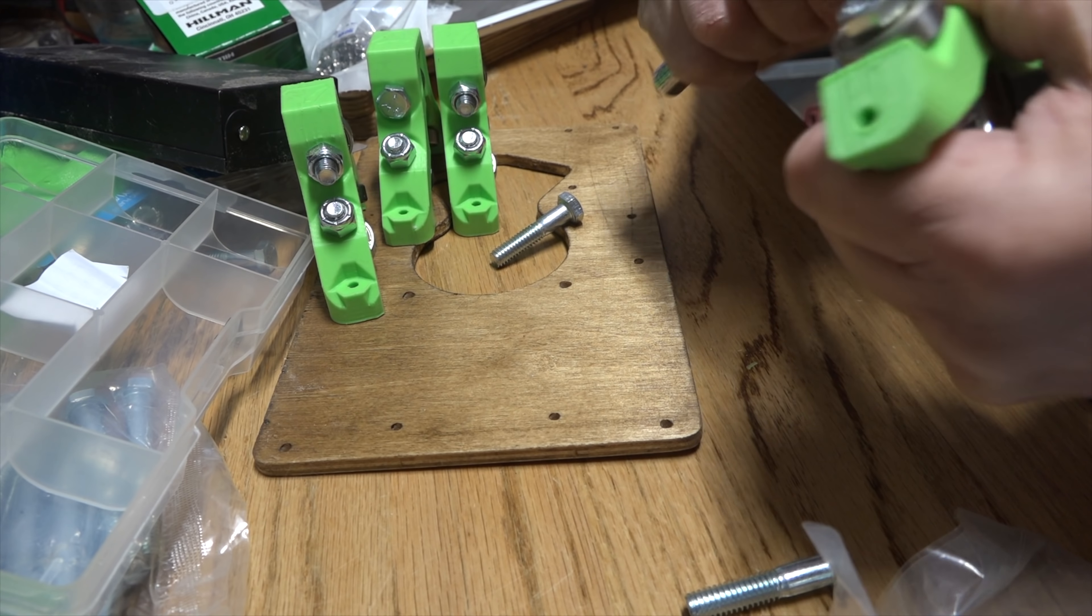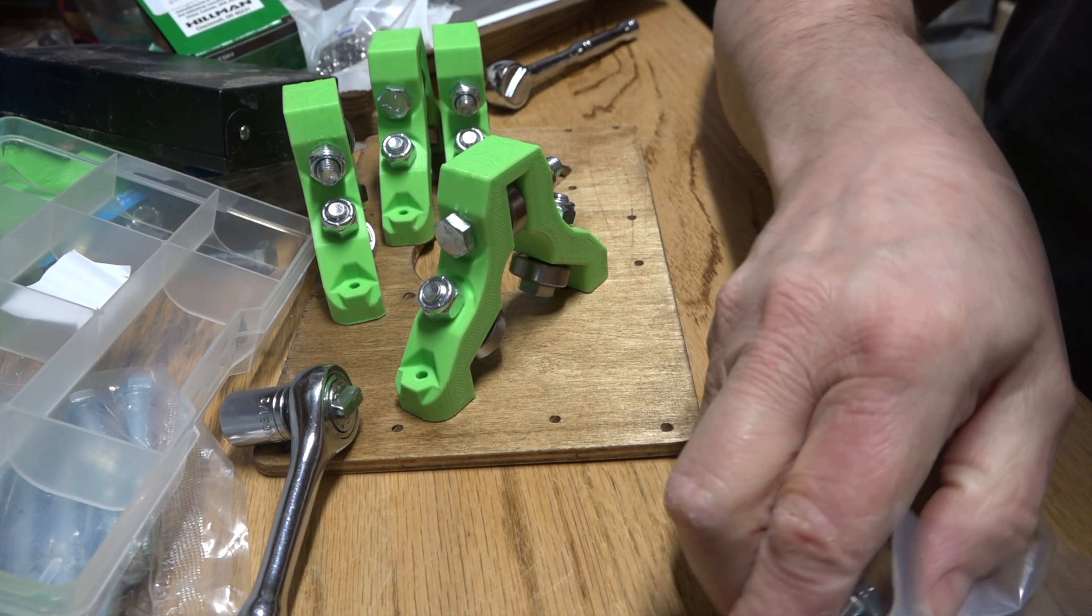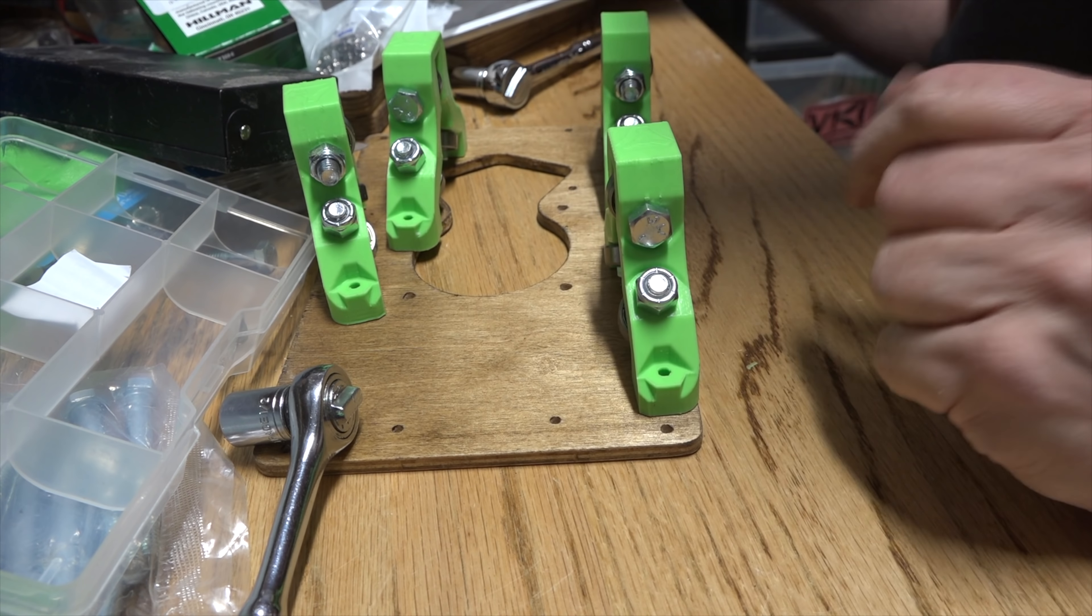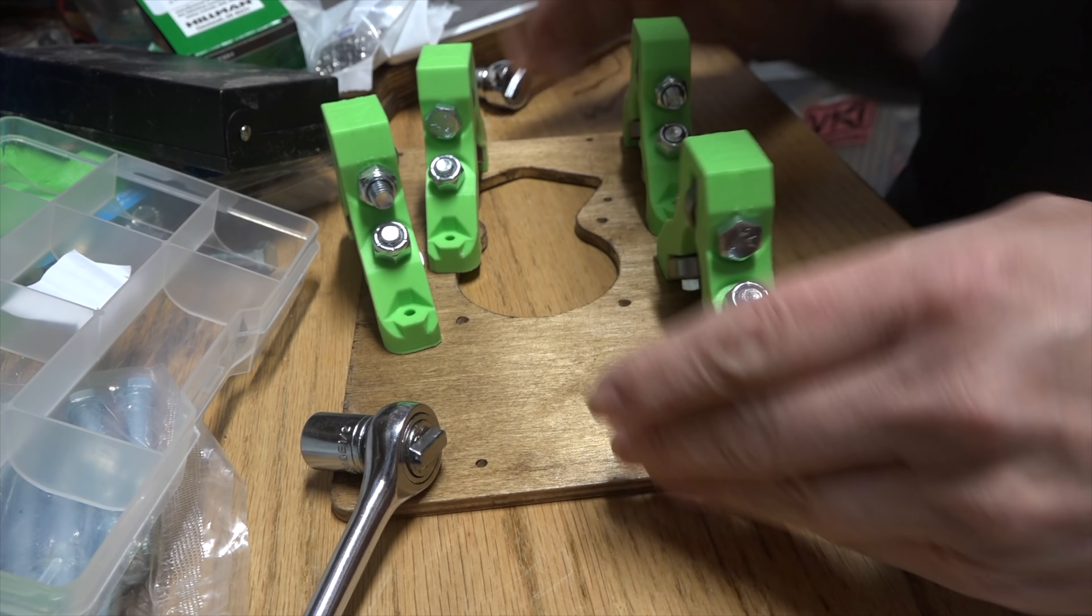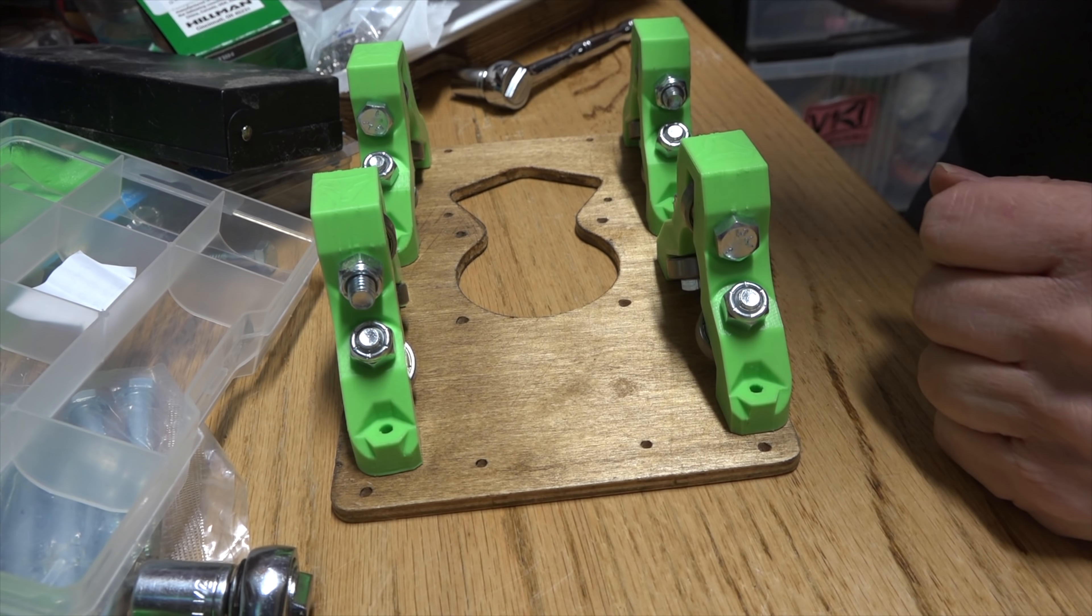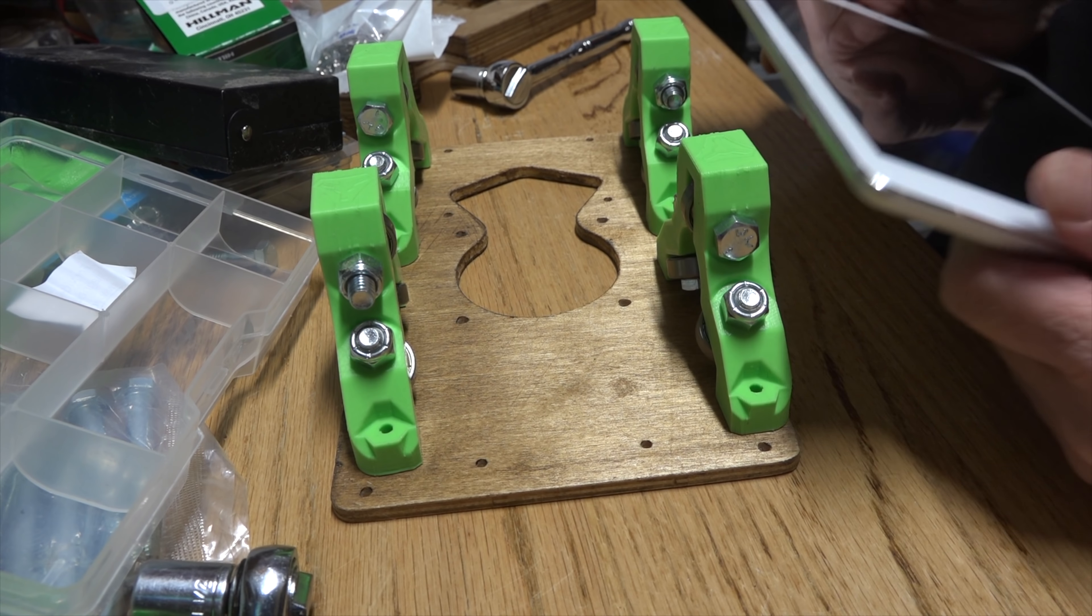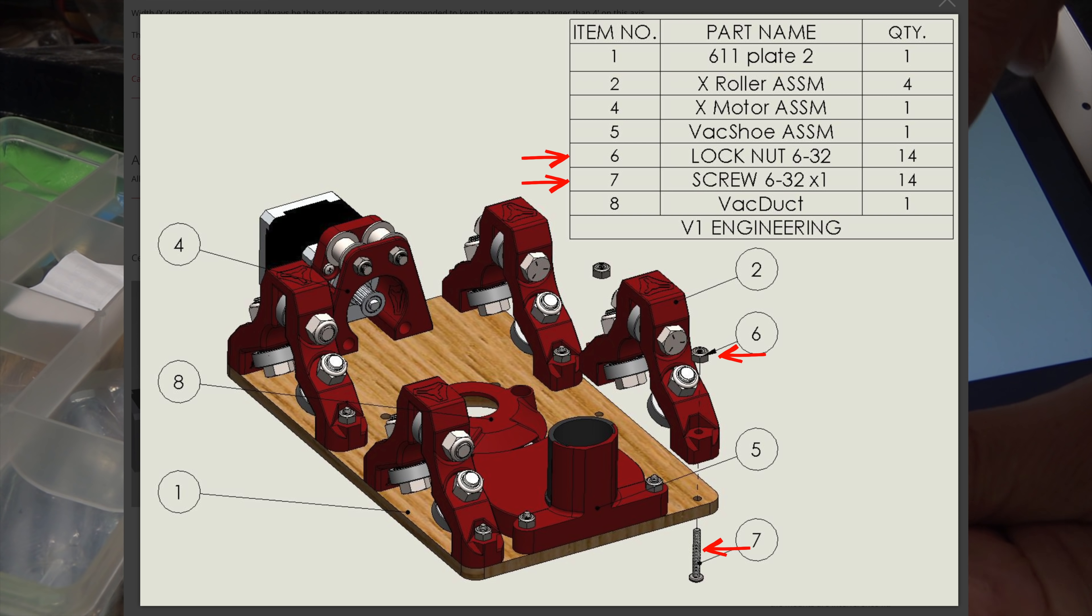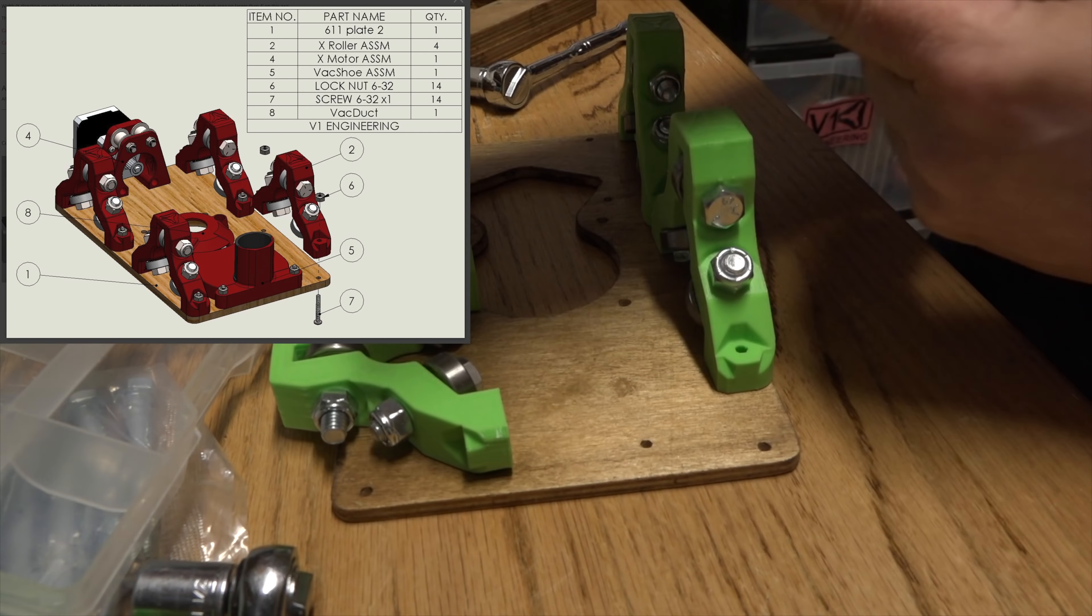There we are, four pieces complete with the bearings on them. It's just a matter of bolting them down to the board here. Let's find out what we need for that. It looks like these guys are held on by number seven, which is a six and three-sixteenths dash 32 by one inch.